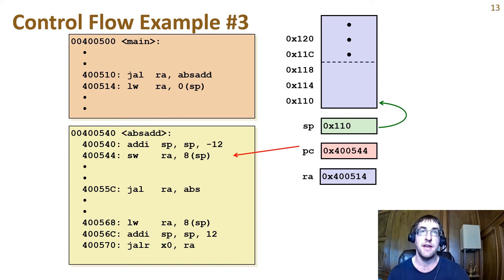That first instruction of absadd makes room on the stack for three registers by decrementing the stack pointer, so the top of the stack now points to address 110. We call each part of the stack associated with a given function call a stack frame, shown here as the memory up to the dashed line. This is also called an activation record.